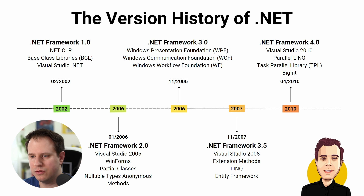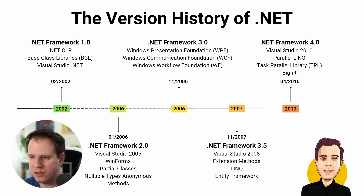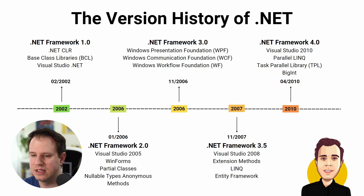The .NET Framework 4.0 was released on April 12th, 2010. It was a massively improved and enhanced version, and also came with the Visual Studio 2010 release. The most notable new technologies introduced were Parallel LINQ, the Task Parallel Library (TPL), and the introduction of the dynamic data type.